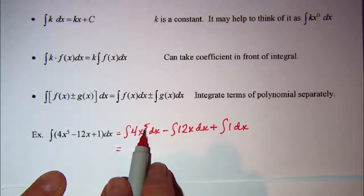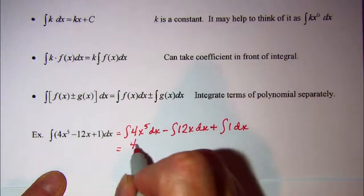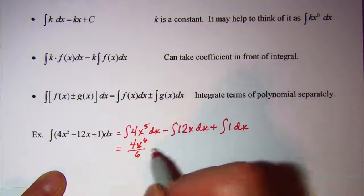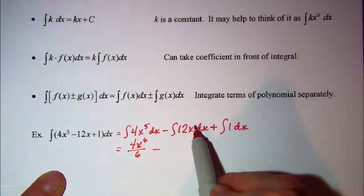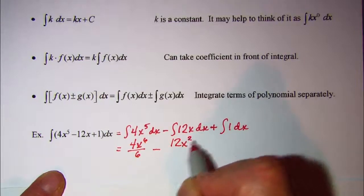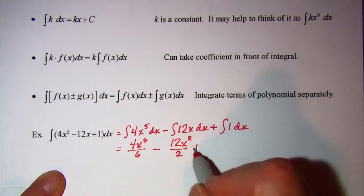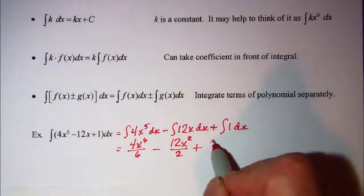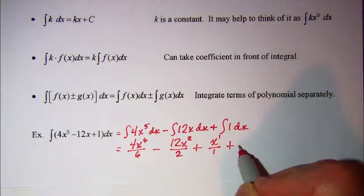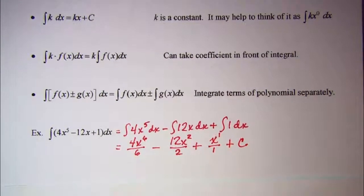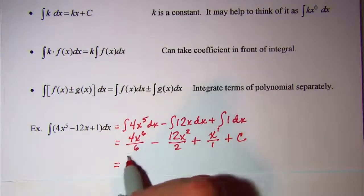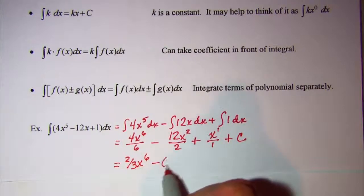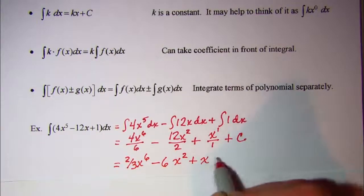Using the inverse of the power rule: increase the exponent by 1 to get x to the 6th, so we have 4x to the 6th divided by 6. Then on the 12x term the exponent is 1, so it becomes x squared, giving 12x squared divided by 2. And for the constant term, think of it as x to the 0, increase by 1 to get x to the 1st divided by 1. Don't forget your arbitrary constant. Simplifying: 2/3 x to the 6th minus 6x squared plus x plus C.